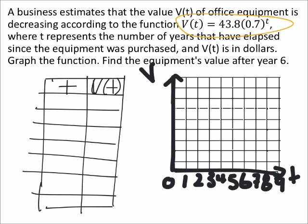So there's my table. The smallest time that I'm looking for is zero, so that would be the current value of the office equipment. And then I can go up from there: one, two, three, and that should get us to year six, which we should be able to see the behavior of this graph. Now I'm just plugging these t values into the equation.